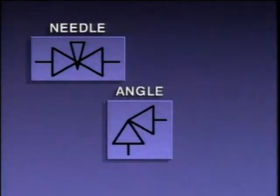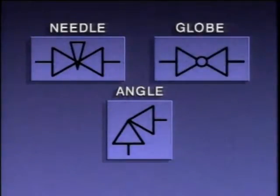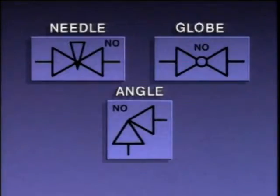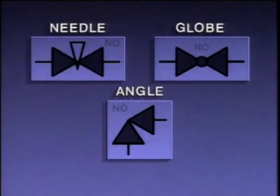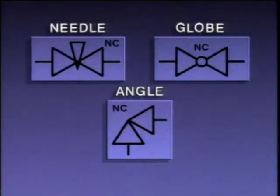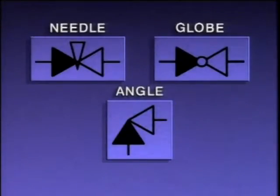An angle valve and a globe valve each have their own symbols on piping diagrams. If the symbols look open or have the letters NO beside them, the valves are normally open. If the symbols are filled in or have the letters NC beside them, the valves are normally closed. The symbol may also be shown partially filled in to indicate the valve is in a throttled position.